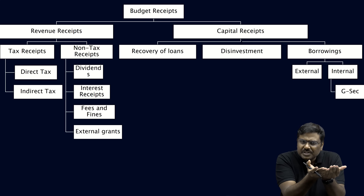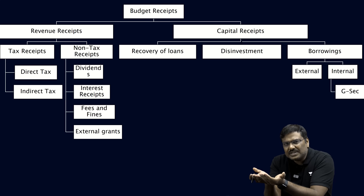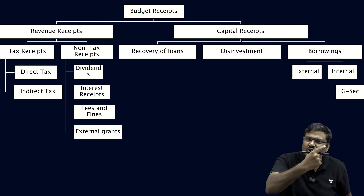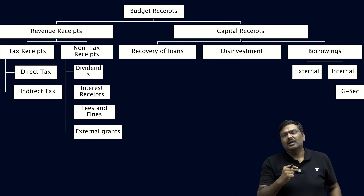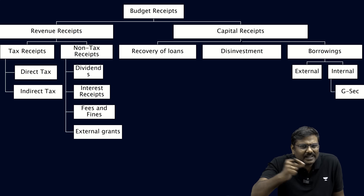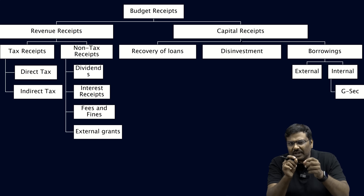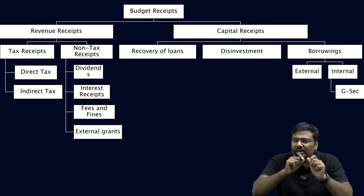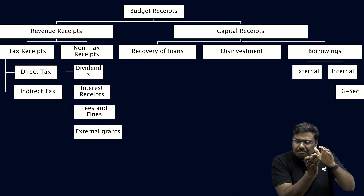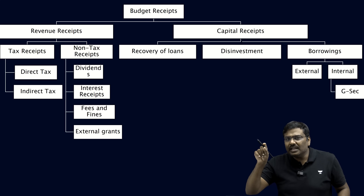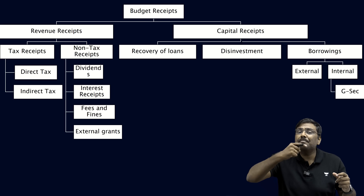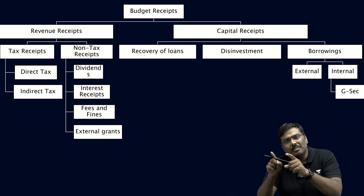The budget documents are introduced in Parliament. Once Parliament approves, they are sent to the President of India. The President gives assent, after which the government is allowed to withdraw money from the Consolidated Fund of India. The precise reason the Appropriation Bill is introduced and passed is that, according to the Constitution of India, if the government wants to withdraw even a single rupee from the Consolidated Fund of India, they require the prior approval of Parliament.